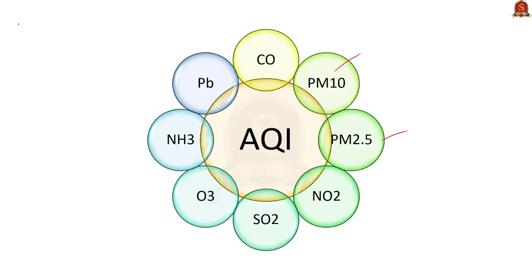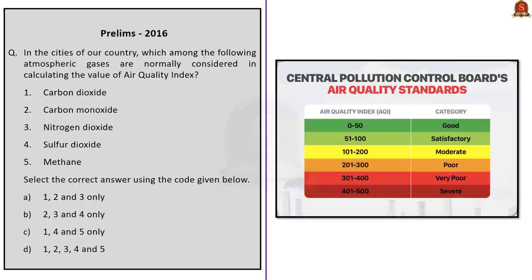The eight pollutants measured by AQI are: particulate matter PM10, particulate matter PM2.5, nitrogen dioxide, sulfur dioxide, carbon monoxide, ozone, ammonia, and lead. Based on measuring pollutant levels, it categorizes air quality into six categories: good, satisfactory, moderately polluted, poor, very poor, and severe. This index was created by the Central Pollution Control Board in consultation with IIT Kanpur.